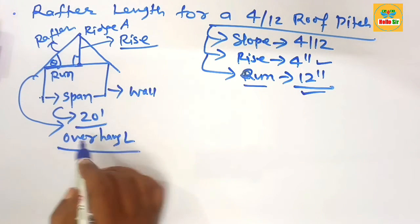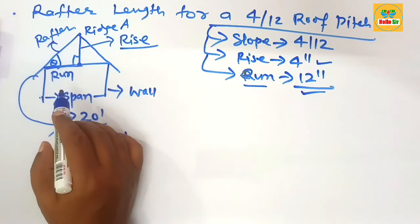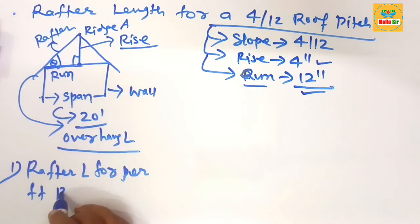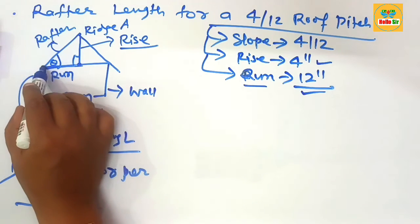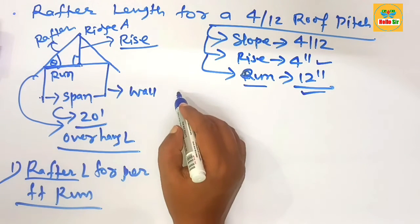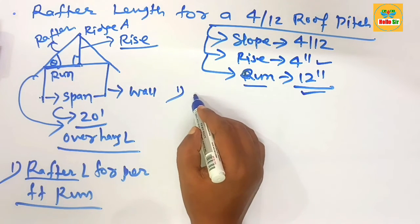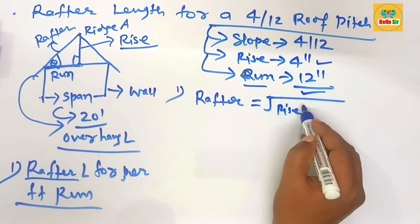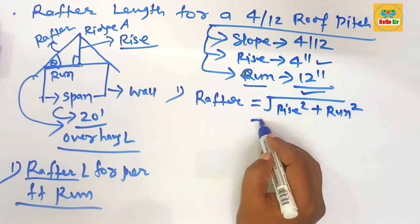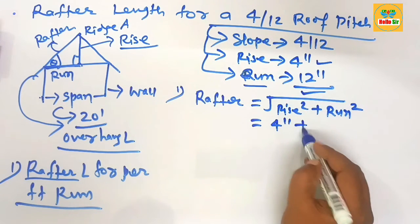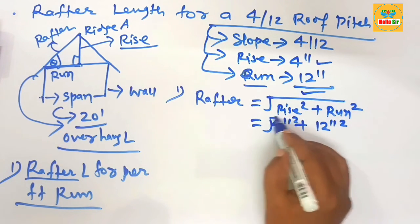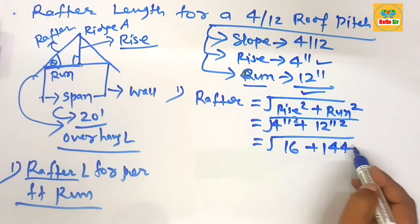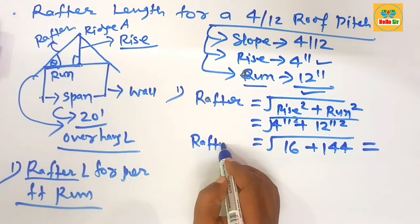First, find the rafter length per foot of run — that is, if you have one foot of run, what is the length of the rafter? We calculate this using the Pythagorean theorem: rafter length equals the square root of (rise squared plus run squared). Putting in the values — rise is 4 inches and run is 12 inches — we get the square root of (16 plus 144).